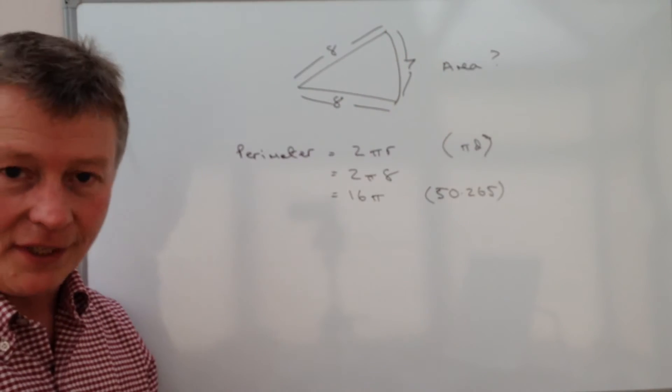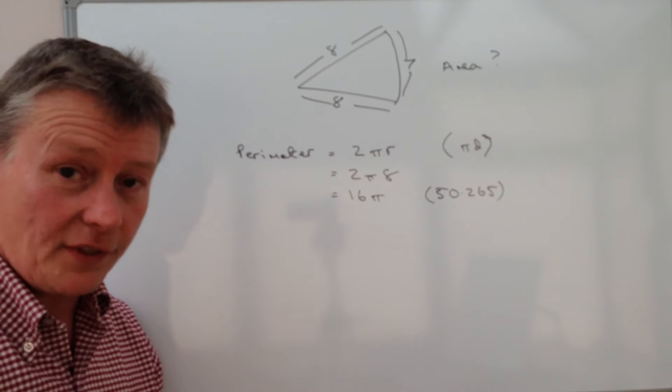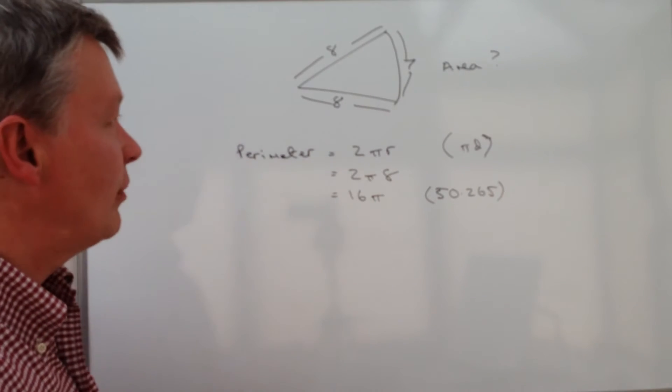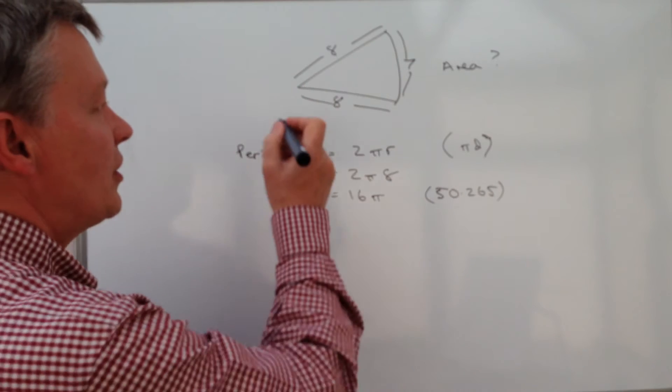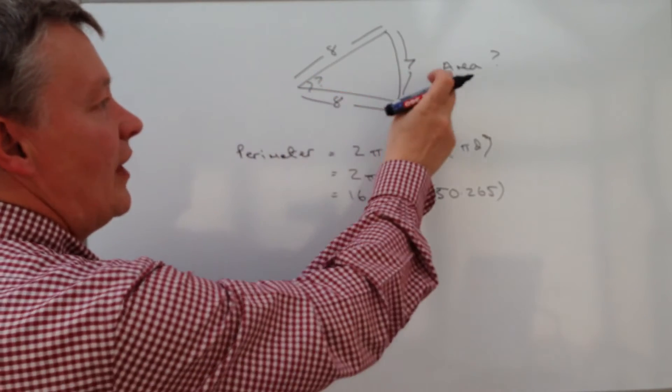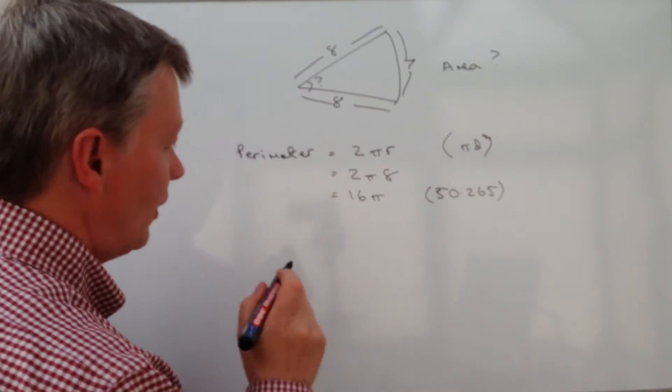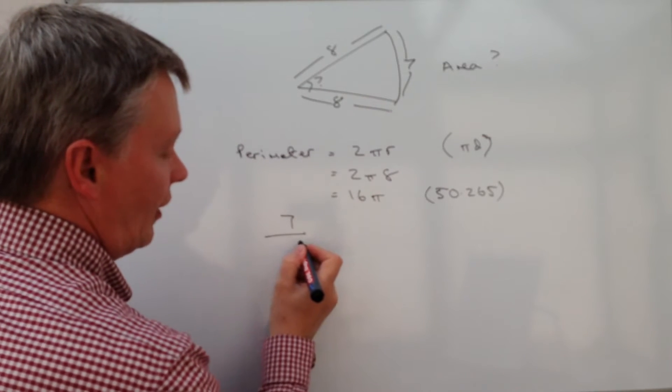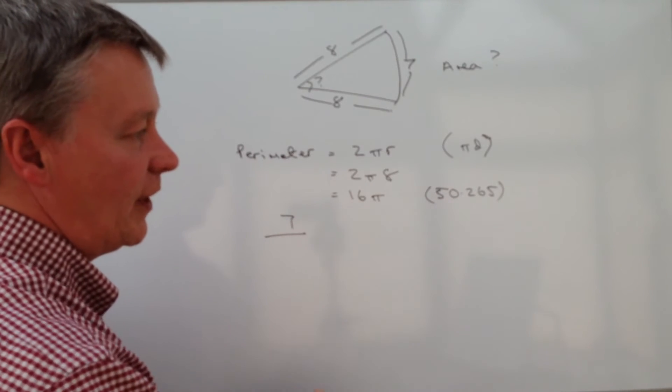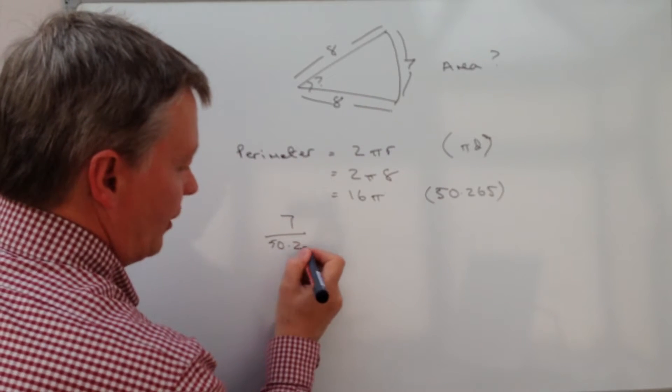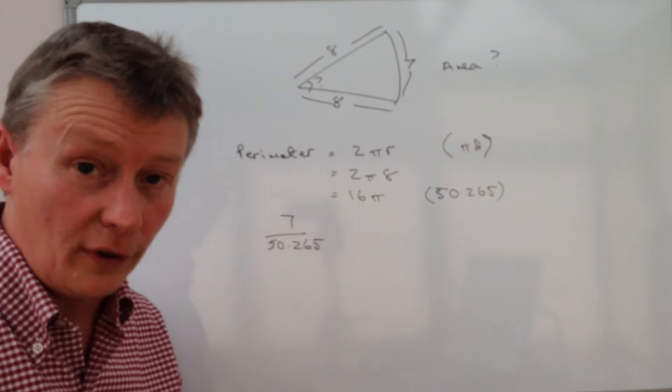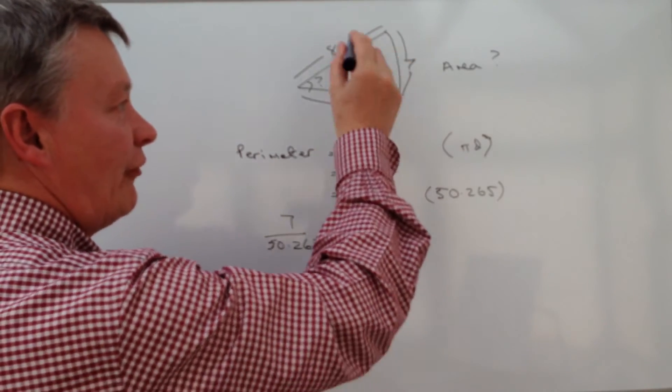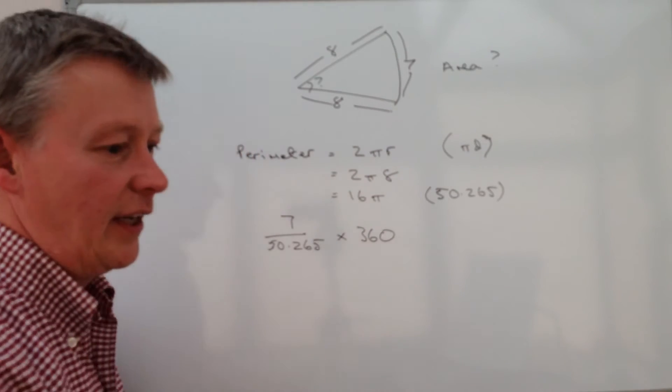Well, we've only got seven centimeters of it, so what we're going to do is use that seven centimeters as a fraction of the overall perimeter. Now if we do that, that will give us the ability then to calculate this angle, which is the bit that we need in order to calculate the area overall. What I mean by that is we've got seven out of the overall perimeter which is 50.265, and that's what we've actually got as an overall perimeter. So in other words, the angle is going to be that fraction of 360 degrees.